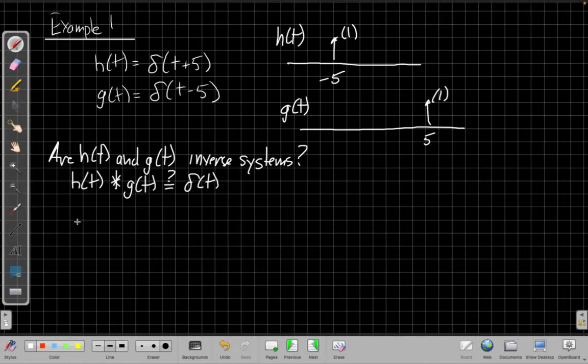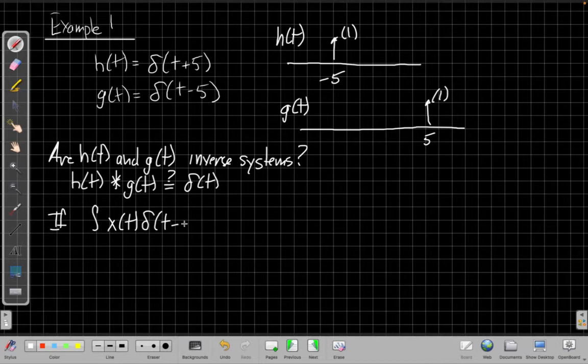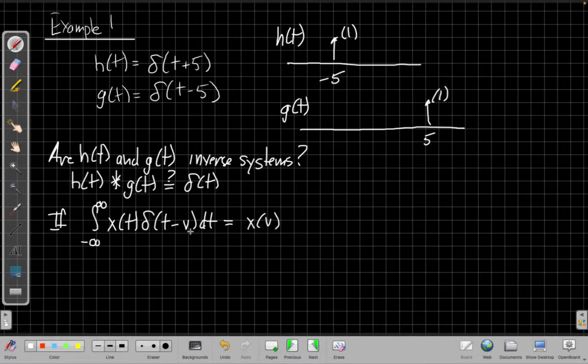Well, the key to solving this problem is to remember the important property of convolving with a delay, right? We say if, or integrating with a delay, if I have any signal, say x(t), and I take it inside an integral with delta(t minus some delay v), and do this integral from minus infinity to plus infinity, this will be equal to, x evaluate, this is the sifting property, right? This will just be x(v).